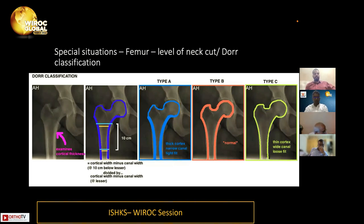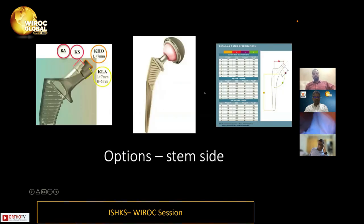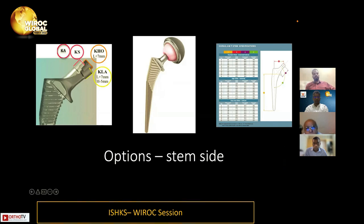It is important to identify and recognize various Dorr classifications and tailor technique accordingly for good fixation with a cementless stem — especially Dorr type A when using stems like Coray. Different offset options must be kept in view, as we cannot replicate individual patients' hip length and offset with a single implant. With Coray, options include KA, KS, KH1, KLA, and a collared option — each with different neck lengths and offsets — and the stem must be tailored to match the patient's neck shaft angle and neck length as closely as possible.